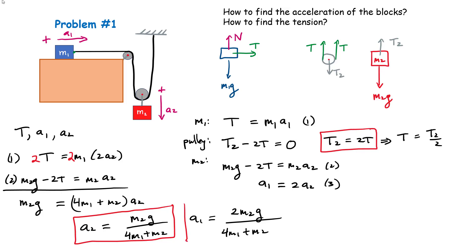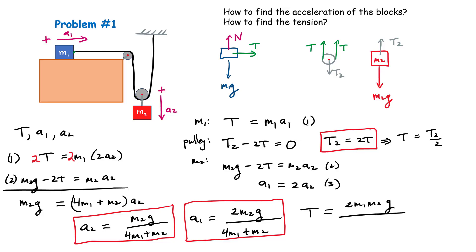We now have the accelerations of both blocks. To find the tension T, use the first equation: T equals M1 times A1, which gives T equals 2M1M2G divided by (4M1 plus M2). You can also find T2 from the pulley relationship — it's simply twice that value. That's it for problem one. Let's move on to problem two.